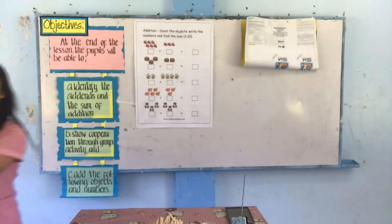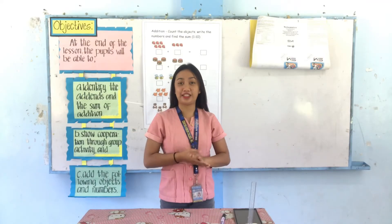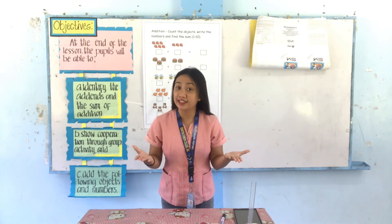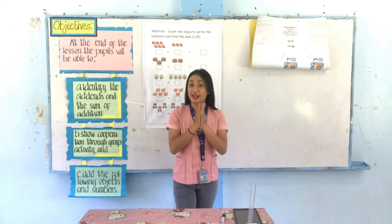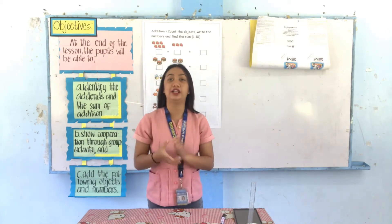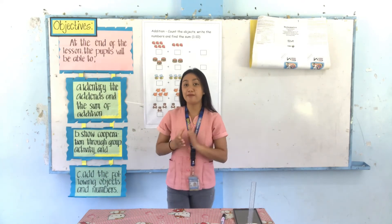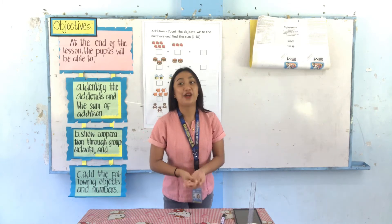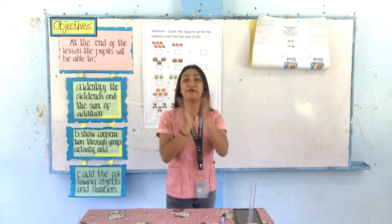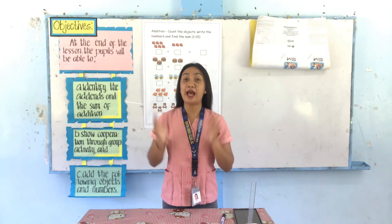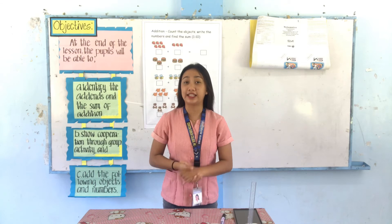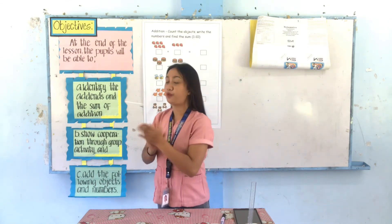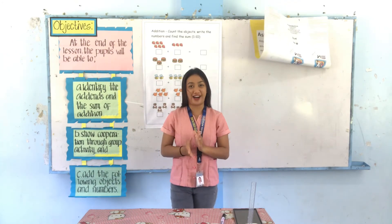Let's start our activity. Five popsicles plus five popsicles equals ten popsicles. Very good, group one — clap your hands. Another example: three popsicles plus ten popsicles. What is the sum? Thirteen popsicles. Very good, group two — clap your hands. Lastly, five popsicles plus three popsicles. How many popsicles? Eight popsicles. Very good, group one. The winner is group one. Very good.